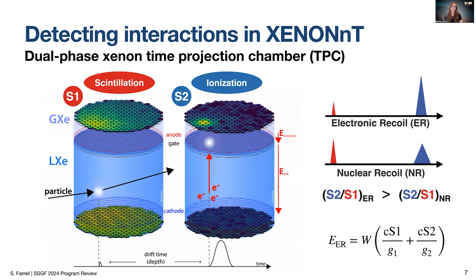The XENONnT detector operates as a dual-phase time projection chamber. When a particle interaction occurs, energy is deposited in the form of two observable signals: primary scintillation, which we call the S1 signal, and secondary ionization, or the S2 signal. These two signals are observed by arrays of photomultiplier tubes at either end of the detector. From their characteristic shape, size, and time delay, the signal's position, type, and energy can all be inferred from the data, giving us information about the characteristic interaction that took place. In this talk, we're interested in interactions that occur with atomic electrons in the detector, called electronic recoil or ER interactions.